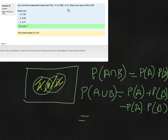0.13 plus 0.12 minus 0.13 times 0.12. And whip out a calculator, 0.13 plus 0.12 minus 0.13 times 0.12 equals 0.2344 as we were required.